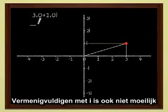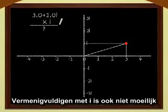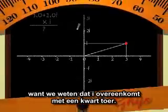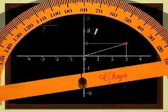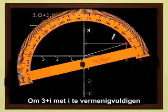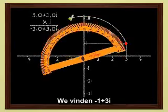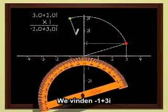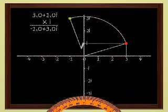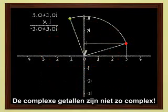Multiplying by i is not difficult either, since we know that i corresponds to a quarter turn. In order to multiply 3 plus i by i, we just have to rotate by a quarter turn. We get minus 1 plus 3i. Not so complicated, these complex numbers.